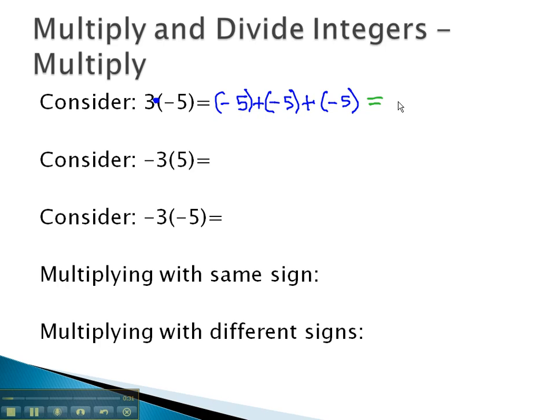And we know from experience with addition that if we add a bunch of negatives, we still have a negative. 5, 5, and 5 is 15, so we have negative 15.